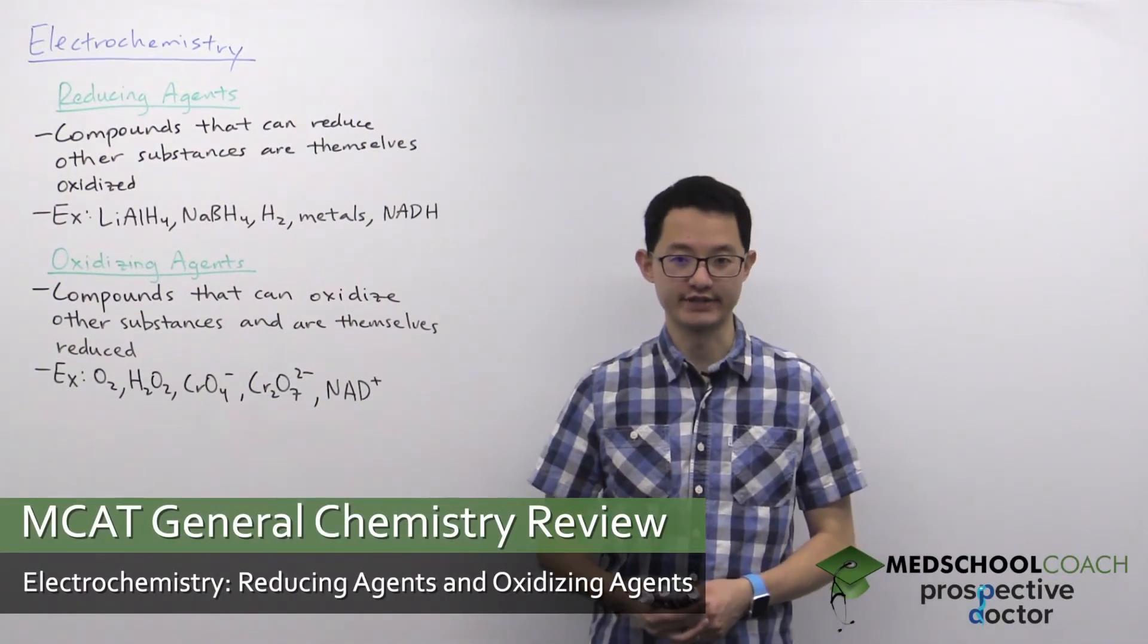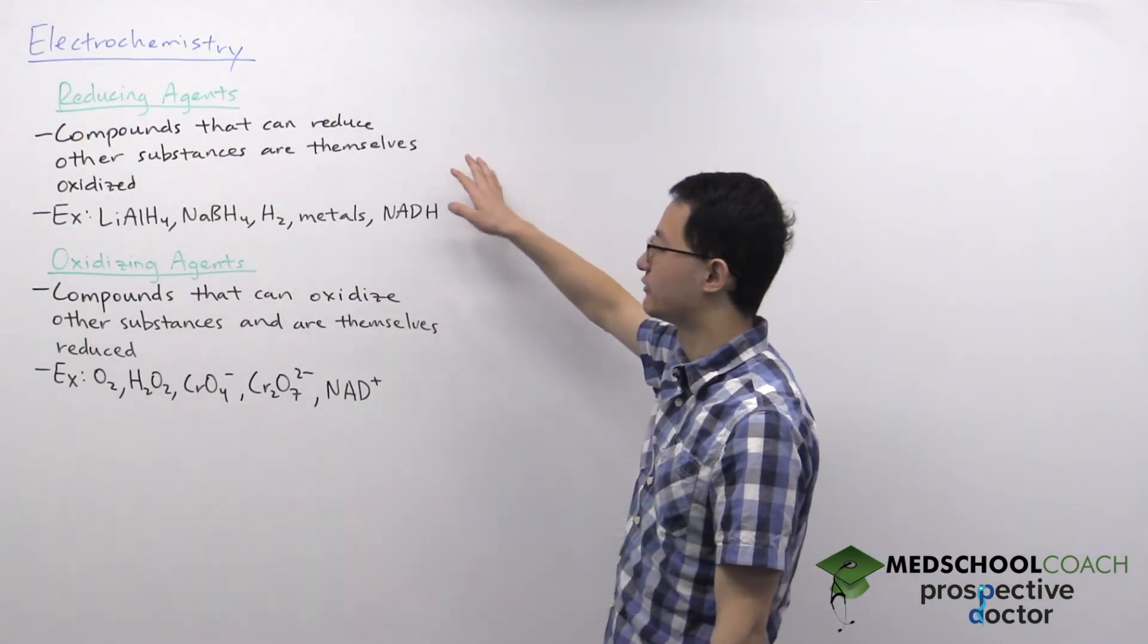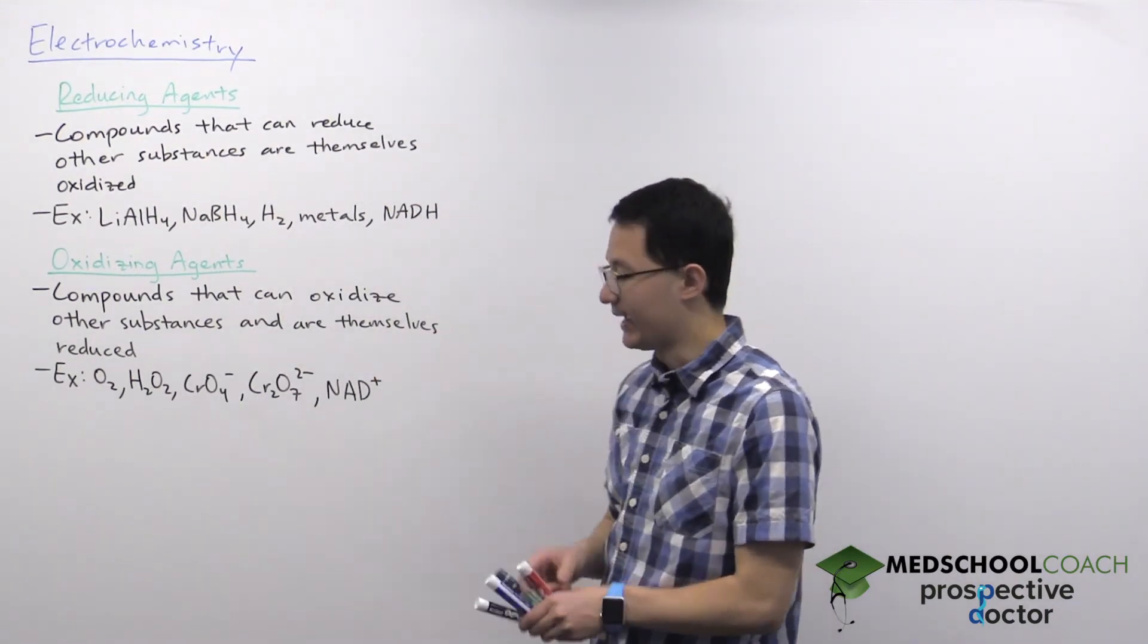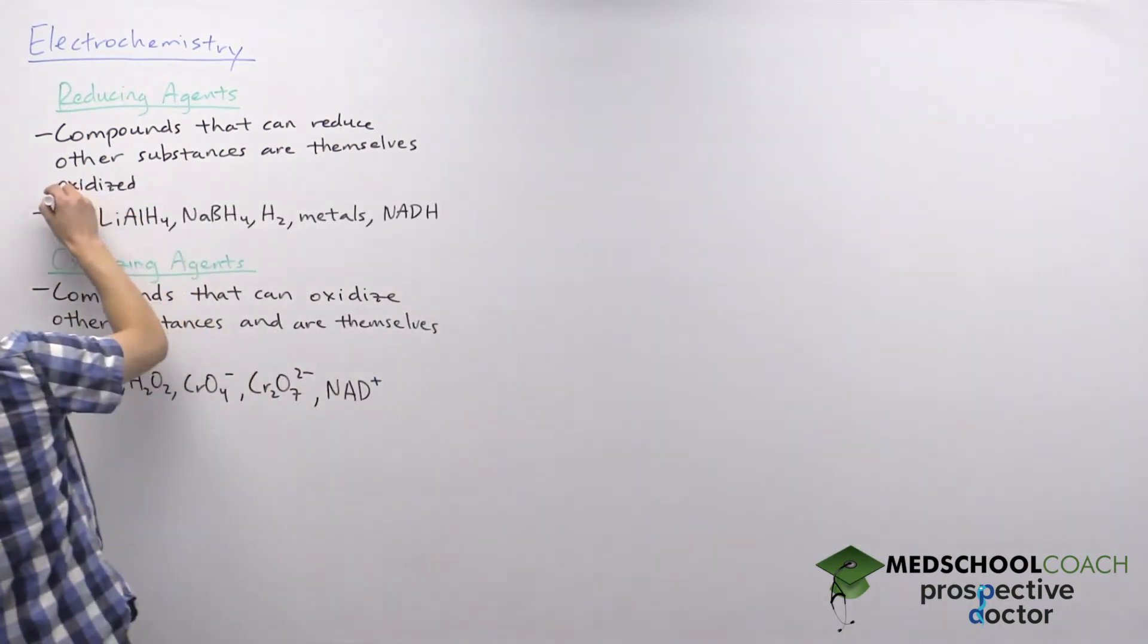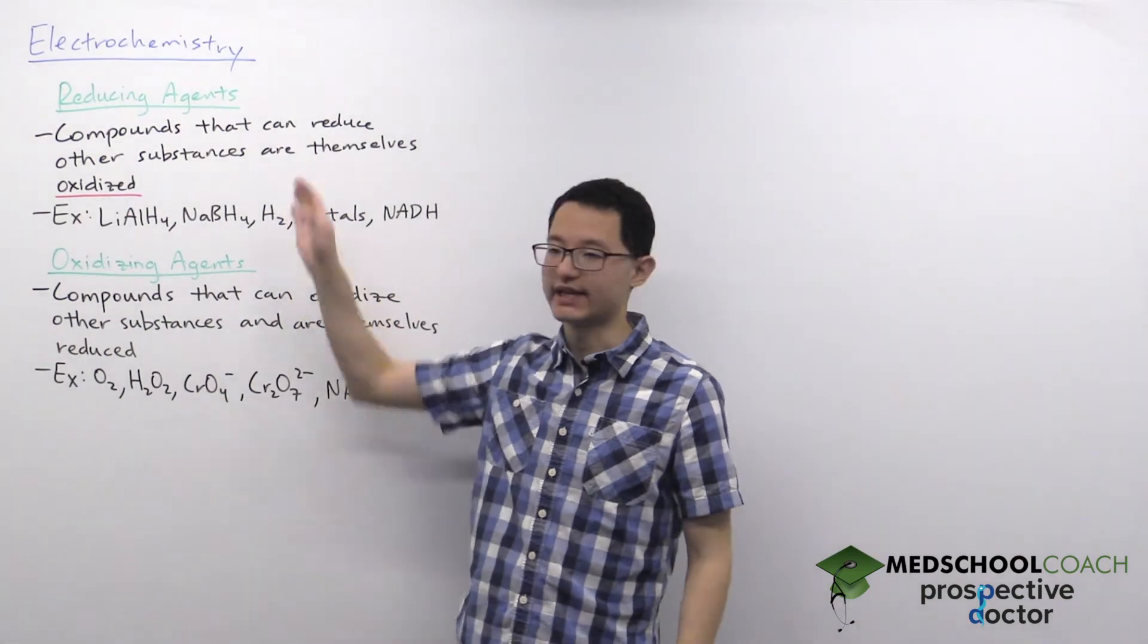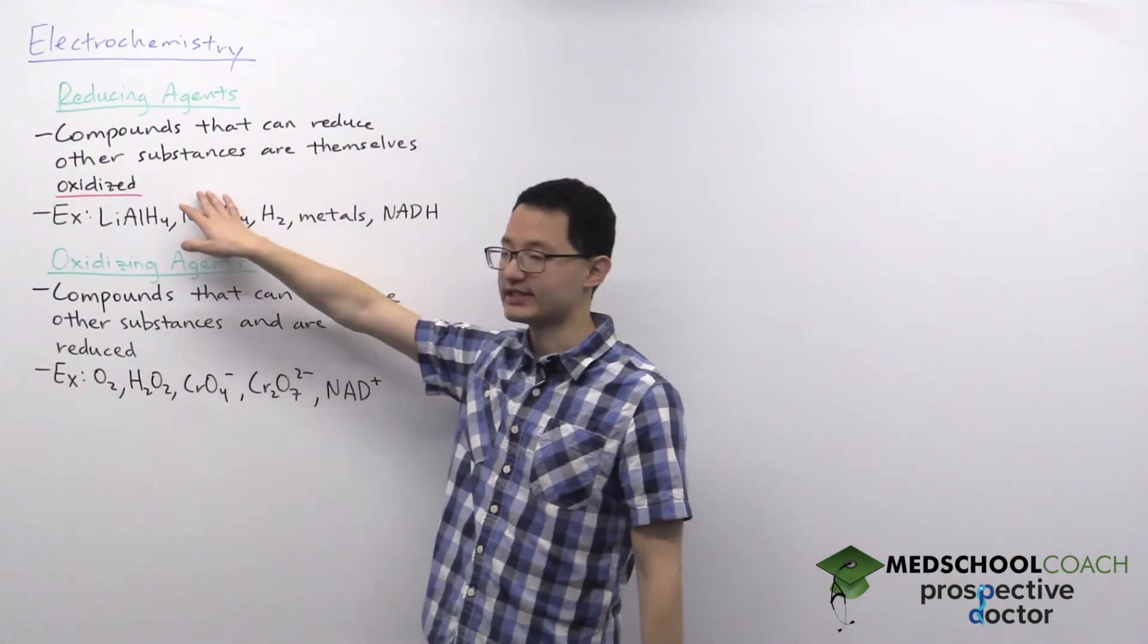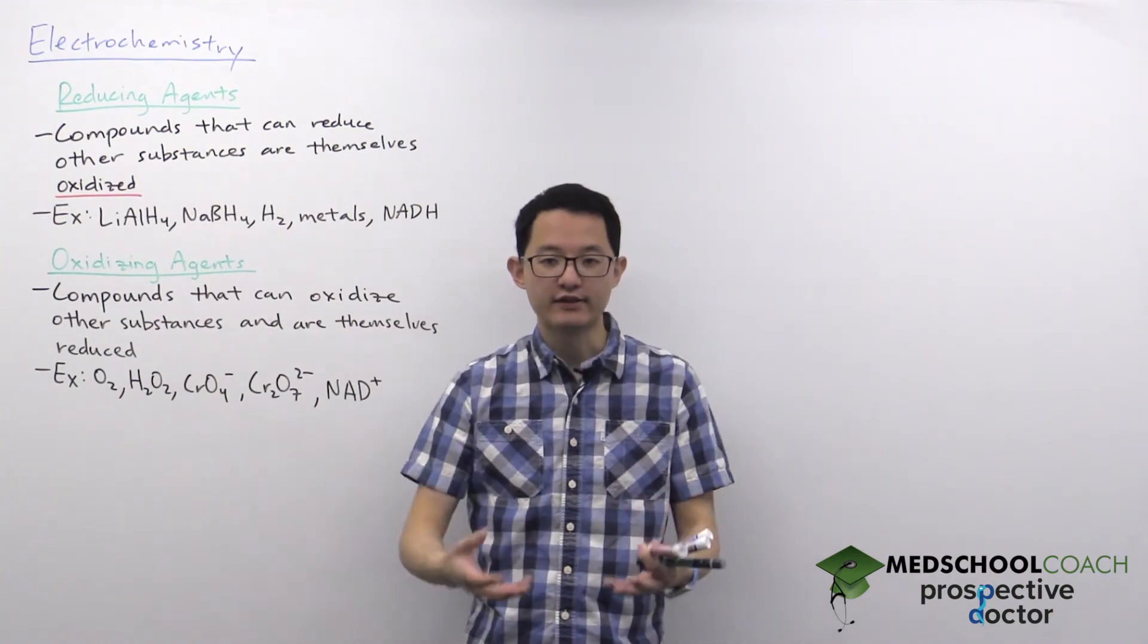In this video we're going to go over oxidizing agents and reducing agents. Reducing agents are compounds that can reduce other substances and are themselves oxidized. You have to be careful here - a reducing agent is not something that gets reduced, it's a species that gets oxidized and reduces other compounds.